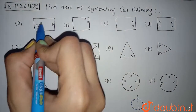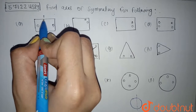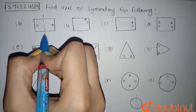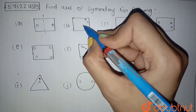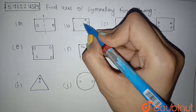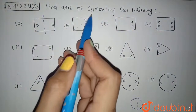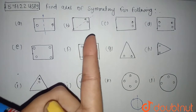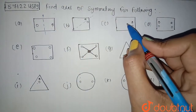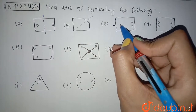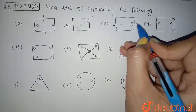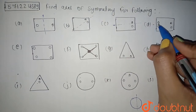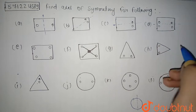Here you have two holes, so you will have an axis of symmetry here, because if you cut from here you will get two equal parts. From here you have this axis of symmetry, because from here if you cut you will get the same two figures. From here you will cut and you will have this axis of symmetry — from here you will get two equal parts.